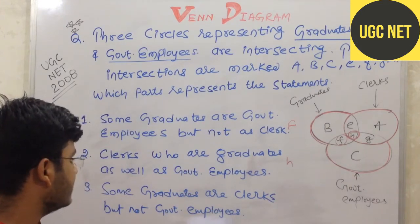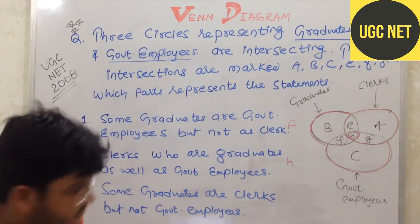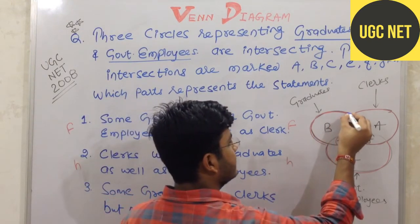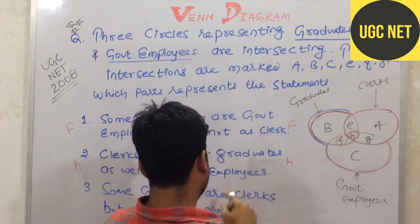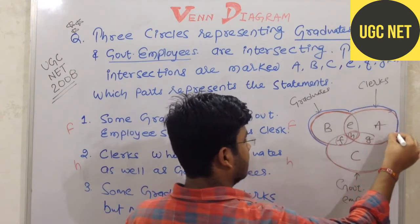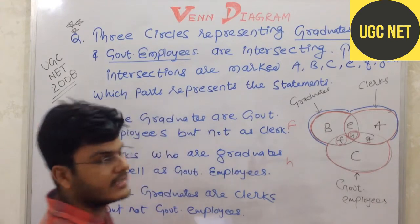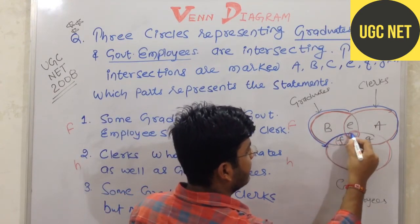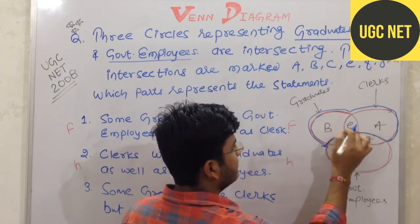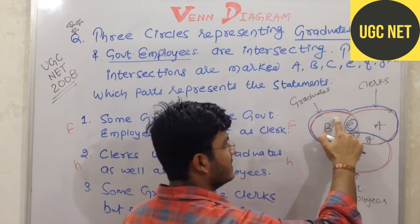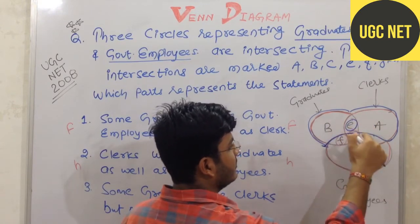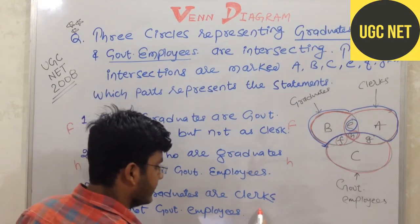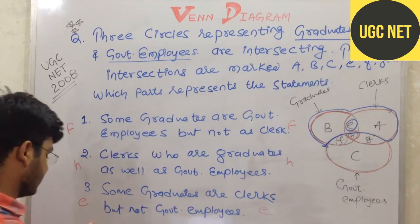The third question says: some graduates are clerks but not government employees. We need the area where graduates and clerks intersect, but excluding government employees. That area is E. So E is the correct answer for question number 3, representing graduates who are also clerks but not government employees.